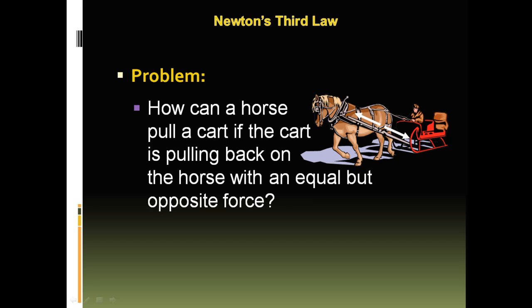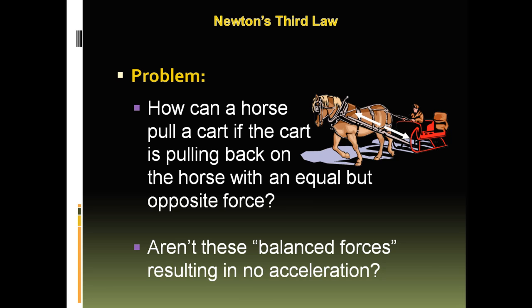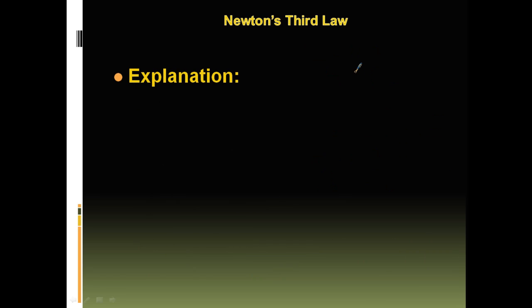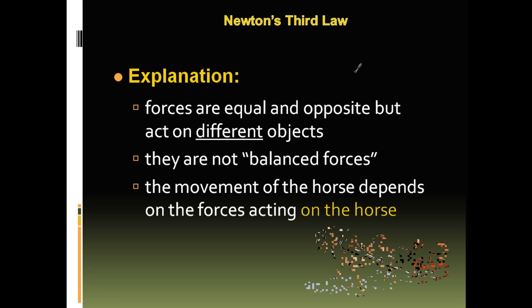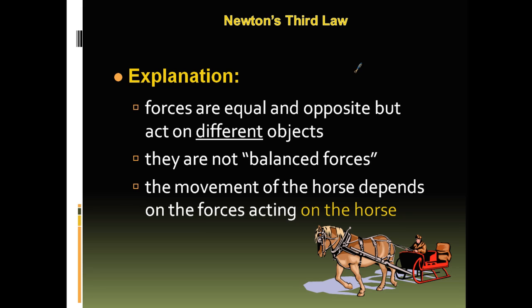How can a horse pull the cart if the cart is pulling back on the horse with an equal but opposite force? Aren't these balanced forces resulting in no acceleration? The force of the horse on the cart equals the force of the cart on the horse. So how does that cart move? The explanation: forces are equal and opposite but act on different objects. They are not balanced forces. The movement of the horse depends on the forces acting on the horse.